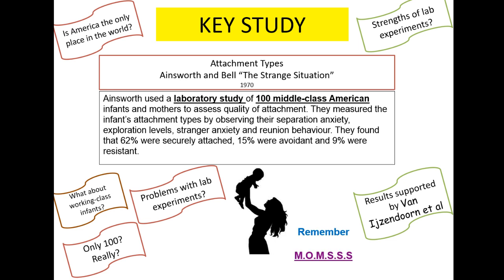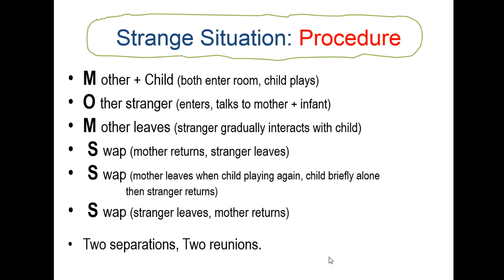One way to remember the Strange Situation procedure is MOMSSS — mum SSS. It's a six-step procedure. The mother and child both enter the room and the child is left to play. Then a stranger — someone completely new to the child — comes in and talks to the mother and infant.